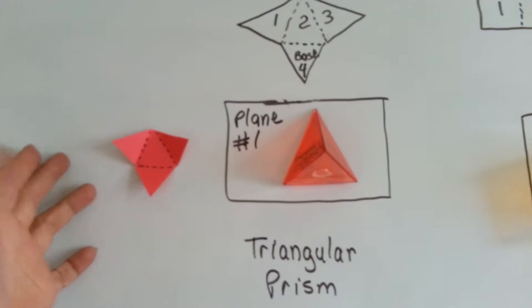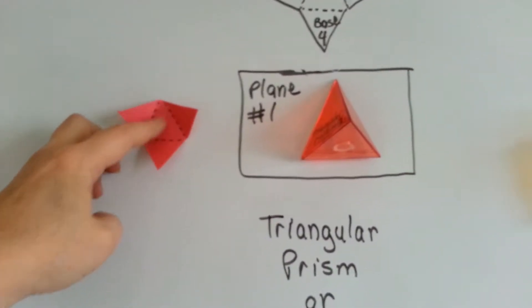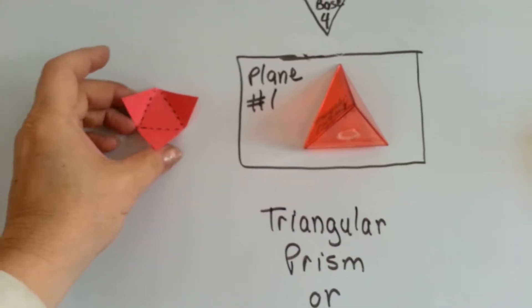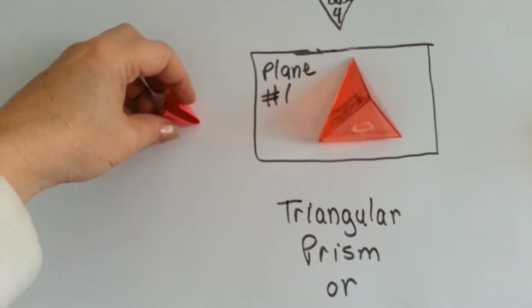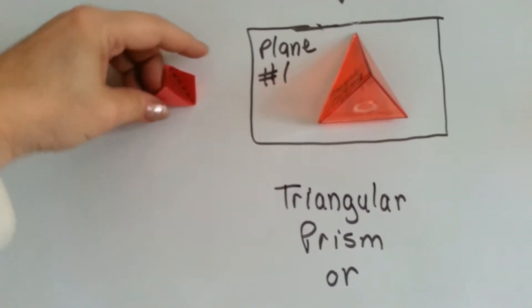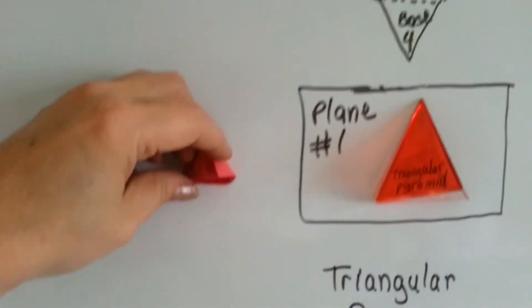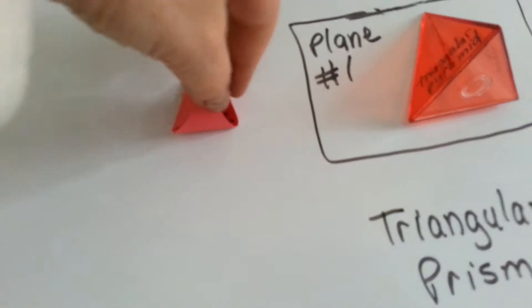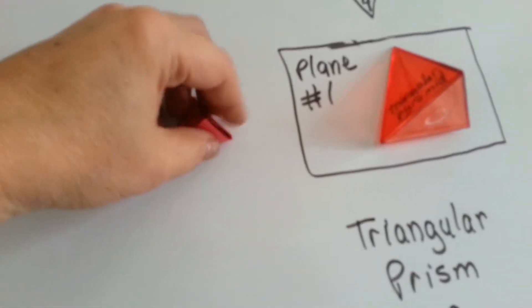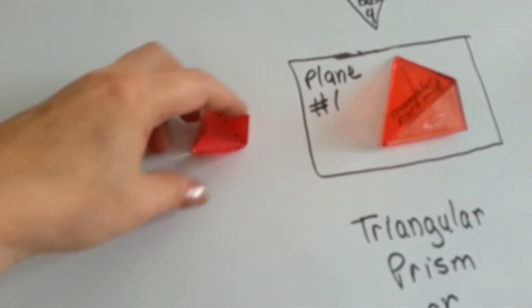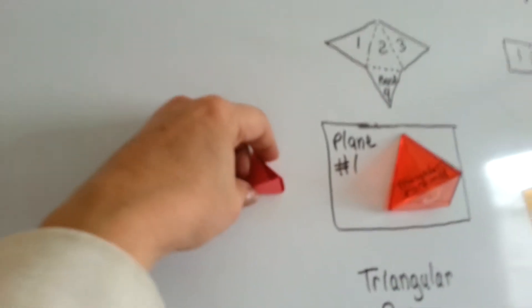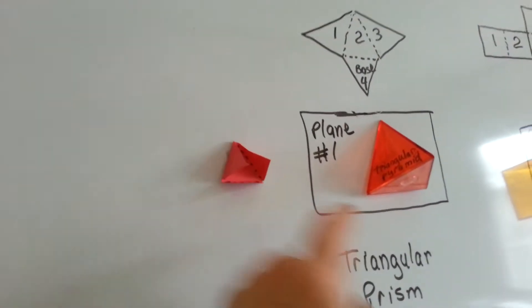When we use construction paper, these dotted lines are going to be where the edges intersect. We can fold it up and create this triangular shape. See it? Can you see that? I don't know how well you can see this. But each side, let me squish it, and it makes a triangle with a base.